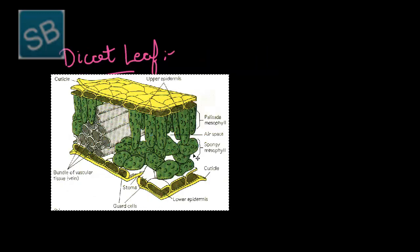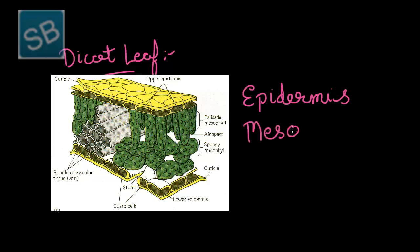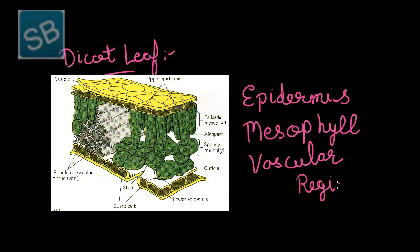This figure shows the vertical section of the dorsiventral leaf, which comprises mainly three regions: epidermis, mesophyll, and vascular region. The epidermis is made up of a single layer of parenchymatic cells. On the upper surface it comprises the upper epidermis and on the lower surface the lower epidermis. This layer is completely covered with cuticles and therefore is cutinized, and it also bears multi-layer trichomes, that is leaf hairs, which arise as projections from the epidermis. The number of stomata is comparatively more in the lower epidermis than in the upper epidermis.